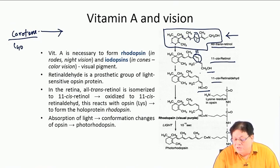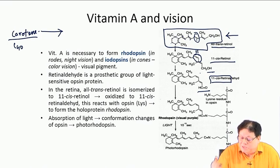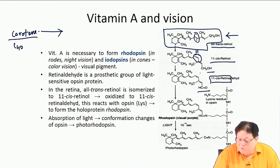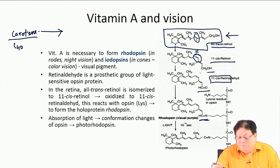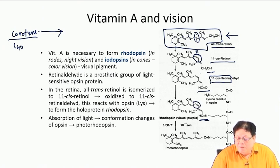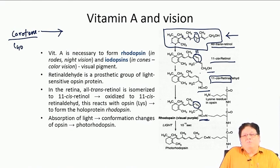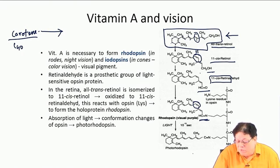11-cis retinal ("al" denoting aldehyde) reacts with a protein called opsin, which has a lysine residue. The lysine side-chain amine reacts with the aldehyde to form an imine — this complex is called rhodopsin. When light falls on rhodopsin, the 11-cis double bond undergoes a change in configuration to the all-trans form.